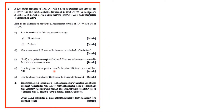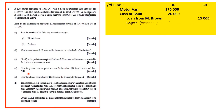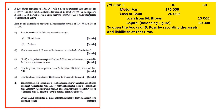Part D requires the general journal entry to record the formation of B-Ross's business on the 1st of June 2014 — this is the opening entry. We know he's bringing in the motor van at $75,000. He's opening a bank account for $20,000, so we have cash and bank of $20,000. He has a loan from M-Brom, which is a credit balance of $15,000. When we put these together, the capital balance would be $80,000 — that is, assets minus liabilities: $75,000 plus $20,000 gives $95,000, minus $15,000, which is $80,000.